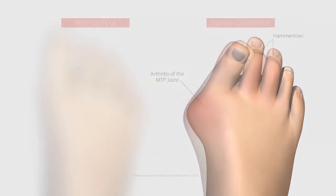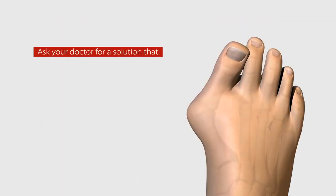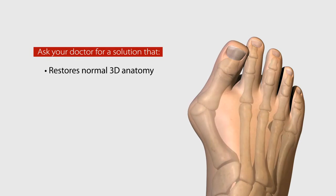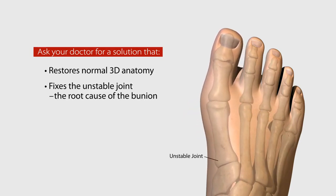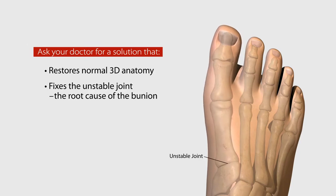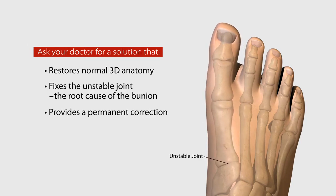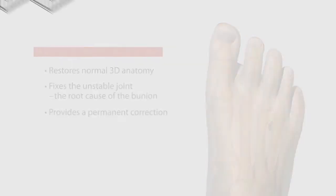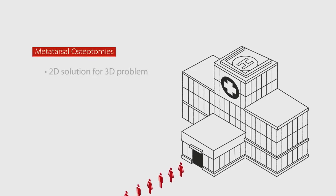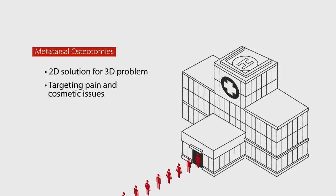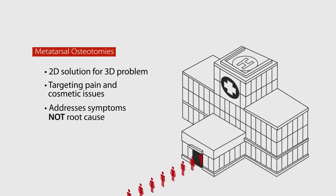So what is the solution for this serious alignment problem? A complete treatment option should restore your normal anatomy in all three dimensions, fix the unstable joint — the root cause of the bunion — and provide a permanent, lasting correction. Currently, the majority of bunion surgeries are osteotomies, which are 2D procedures for your 3D problem.